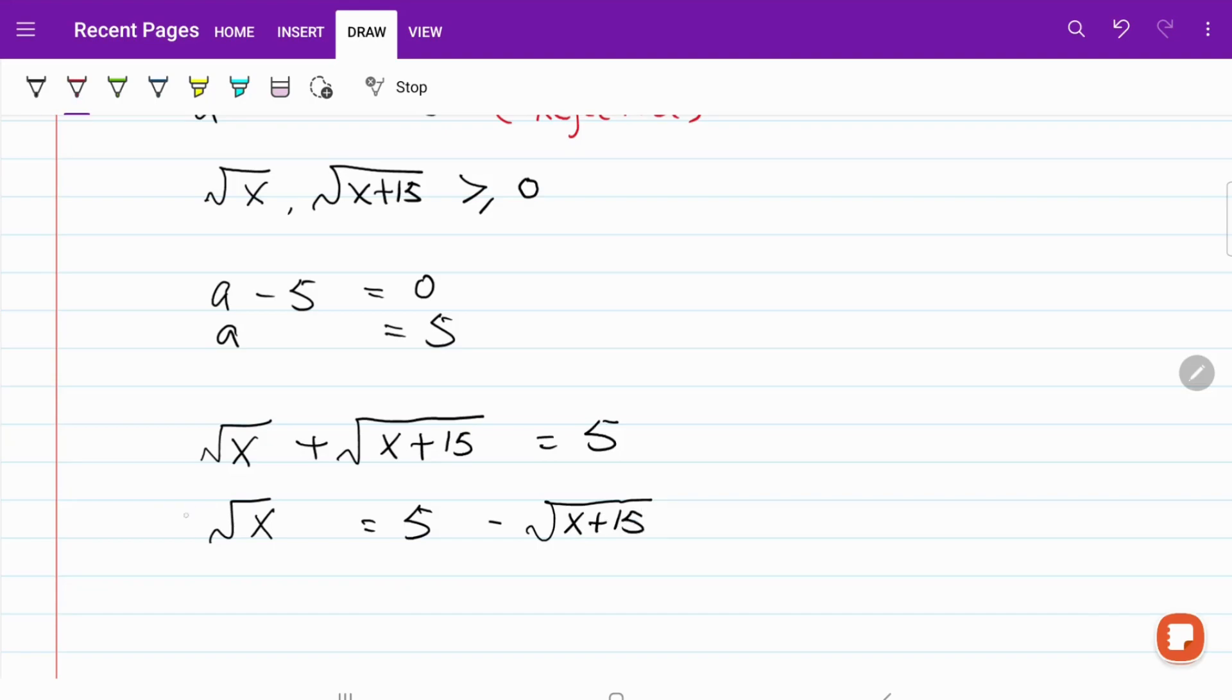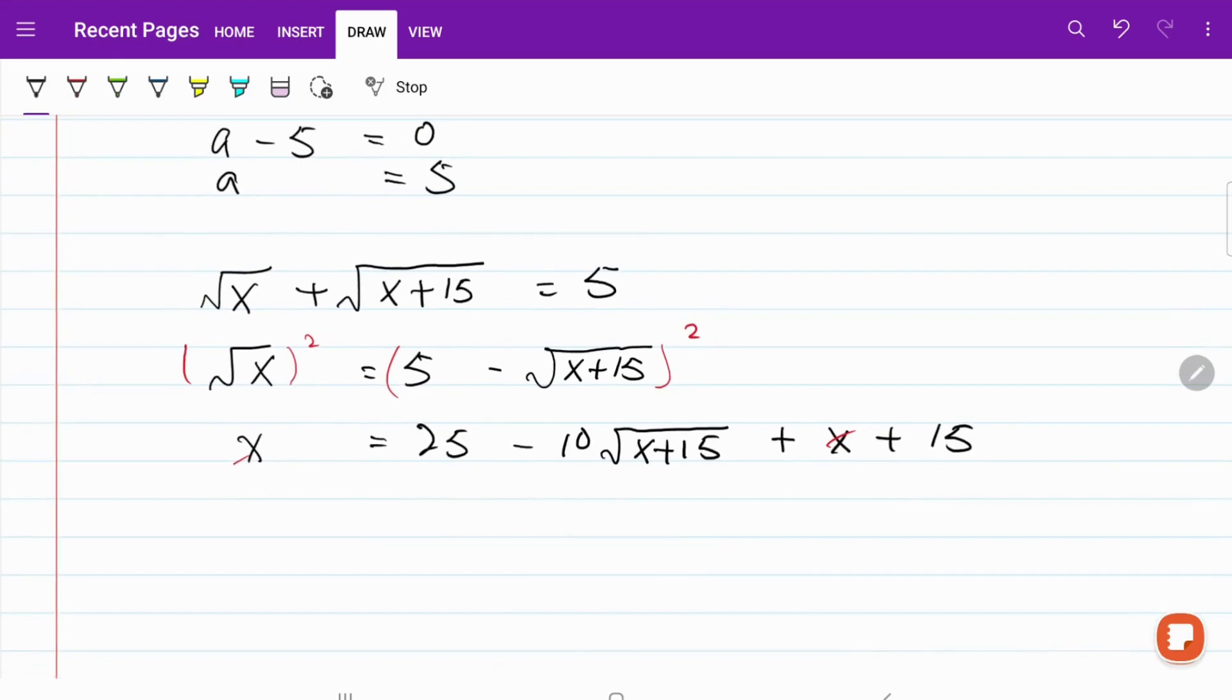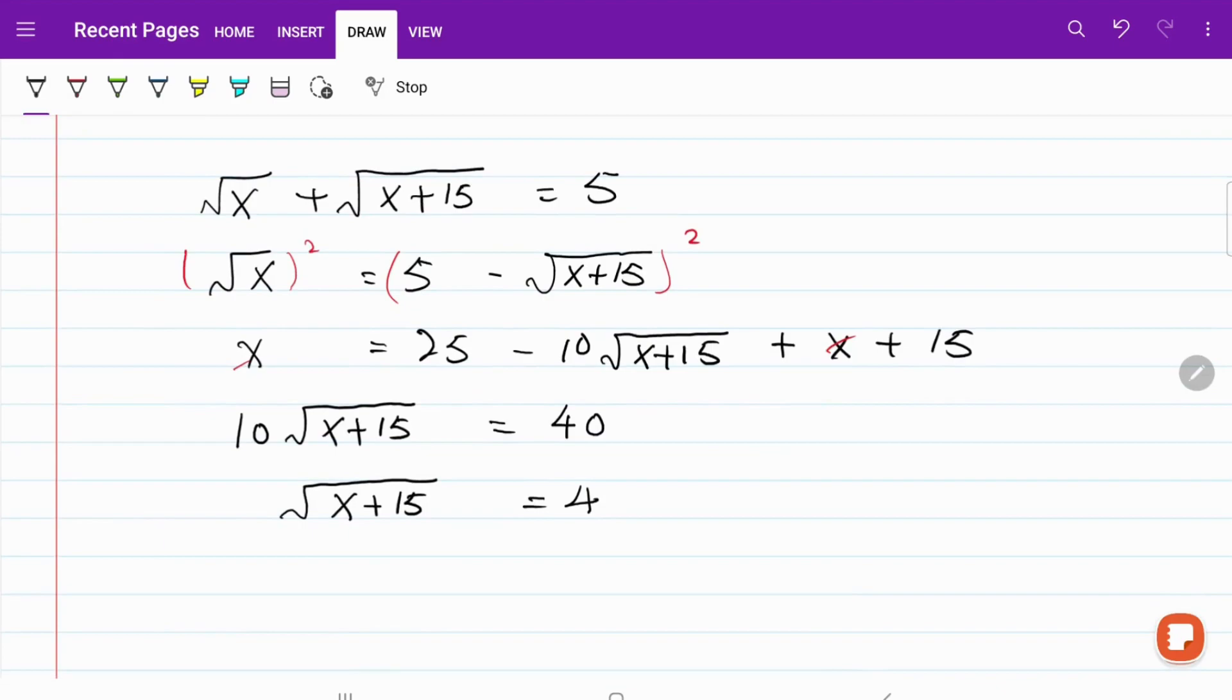Square root of x is equal to 5 minus square root of x plus 15. We will take the square on both sides. So now what I have is x is equal to 25 minus 10 square root of x plus 15 plus x plus 15. Cancel out x on both sides. Now what I have is 10 square root of x plus 15 is equal to 40 and square root of x plus 15 is equal to 4, meaning x plus 15 is equal to 16, x is equal to 1.